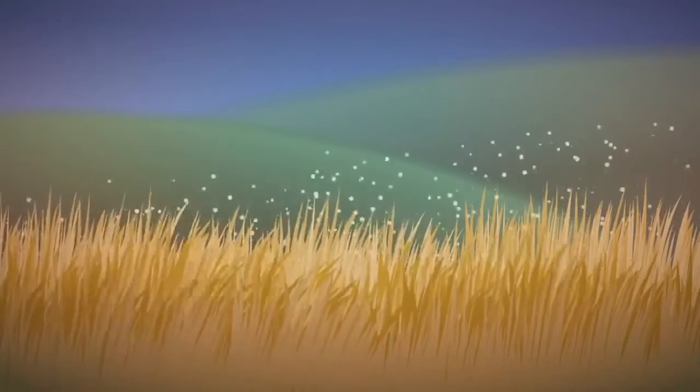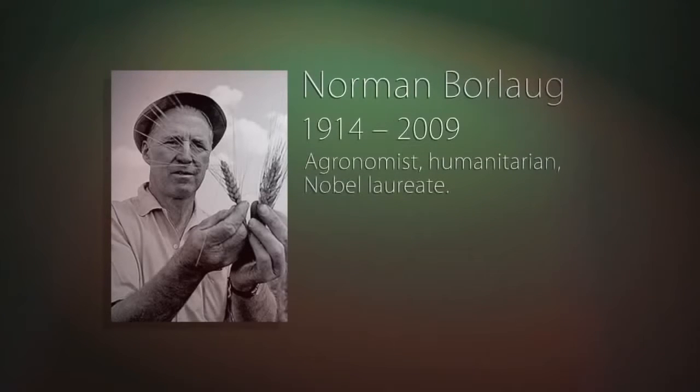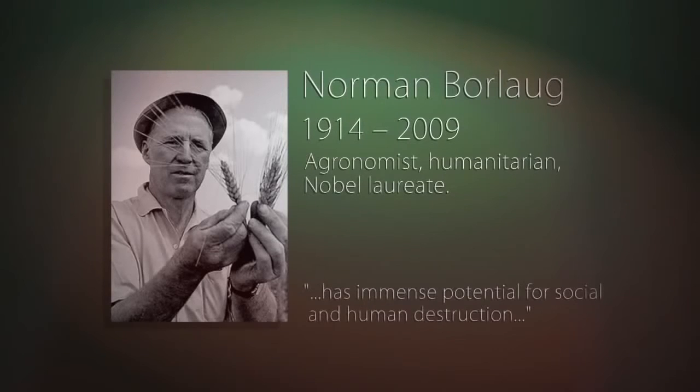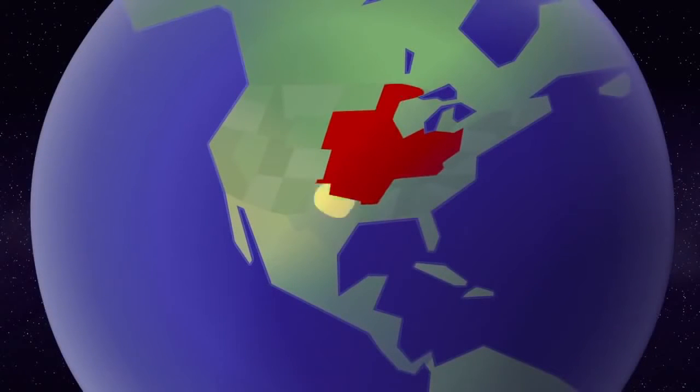Irrigation encourages the growth of stem rust fungi like UG-99, which has the potential to destroy 80% of the world's grain harvest. According to Norman Borlaug, father of the Green Revolution, stem rust has immense potential for social and human destruction.